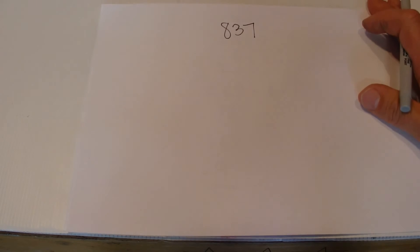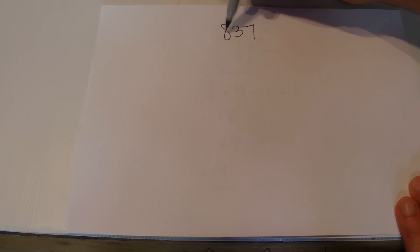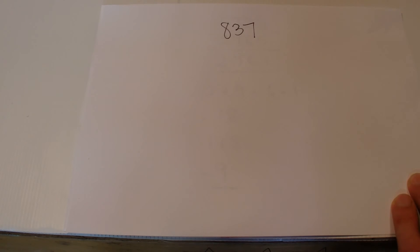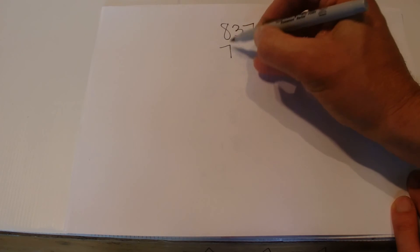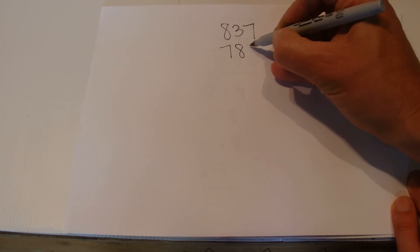Then you ask them to rearrange those 3 digits in 837 to give you another number. And they may say 7, 8, and 3.